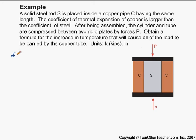So the displacement in the steel is equal to just simply alpha of the steel times the change in temperature times the length.